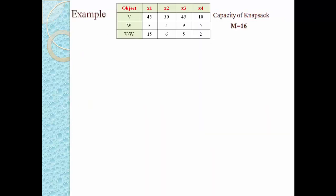Let us solve one example. Suppose we have four objects: x1, x2, x3, and x4. Every object has some weight and value. x1 has value 45 and weight 3; x2 has value 30 and weight 5; and the last object has value 10 and weight 5. The capacity constraint of our knapsack is M = 16, meaning it can carry a maximum of 16 units of weight. We need to check that total weight does not exceed 16.